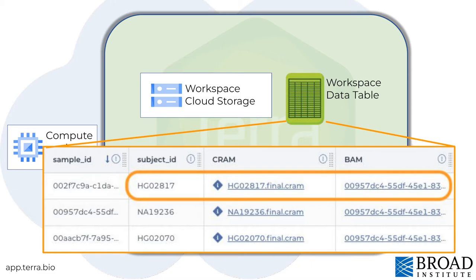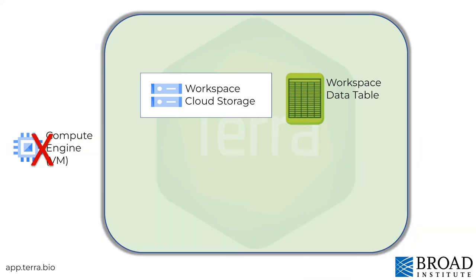Tables can help keep output data associated with the input data. In this case, the BAM file for the subject is right next to the input. When the workflow is complete, Terra deletes the VM so you don't pay for resources you're no longer using.